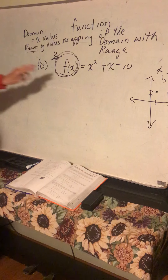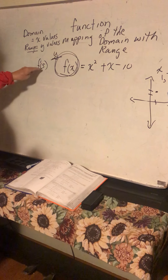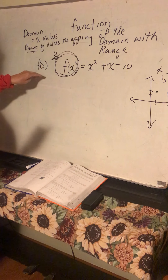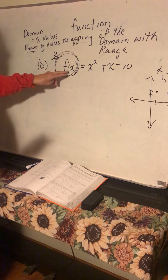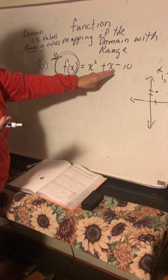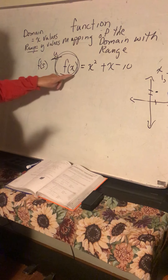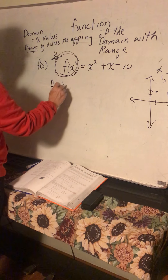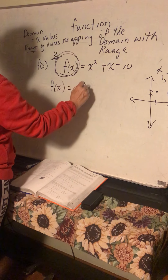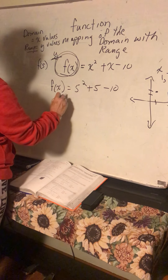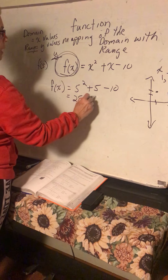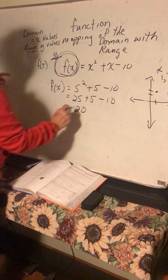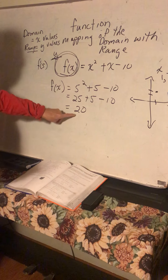When you look at this, don't get mixed up and think you're going to put the x value in for f of x. They're going to ask you to solve f of 5 — the function of 5. Don't put it in the wrong place; put it in for x and solve, because f of x is just the y value. So five squared plus five minus 10 equals 25 plus 5 minus 10.